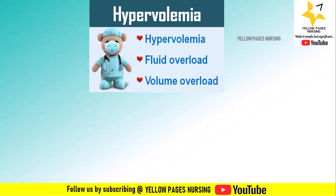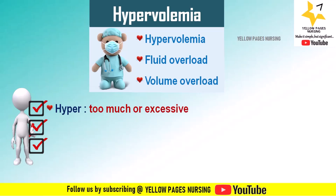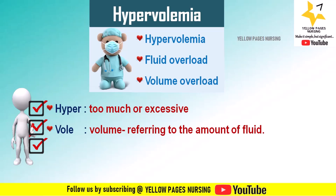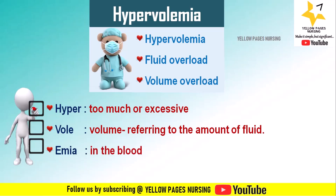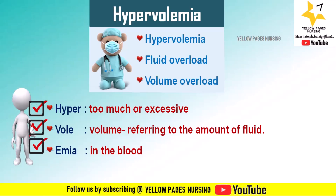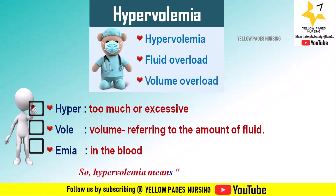Hypervolemia is also called fluid overload or volume overload. The prefix 'hyper' means too much or excessive. 'Vol' comes from volume, referring to the amount of fluid. And the suffix 'emia' means in the blood. So hypervolemia together means having too much fluid in the blood.